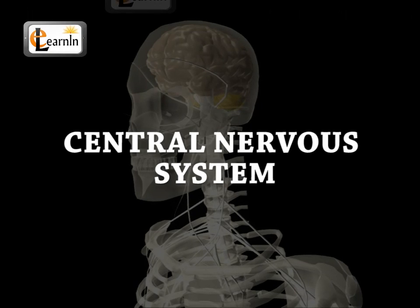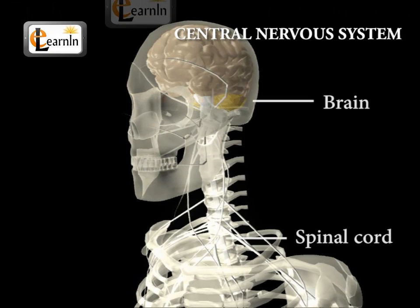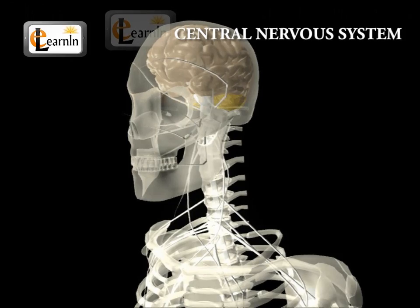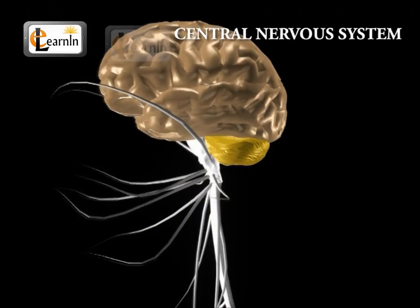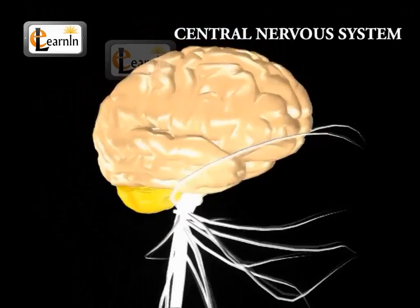The brain and the spinal cord are the two components of the central nervous system. They are continuous with each other and they both have nerve cells.